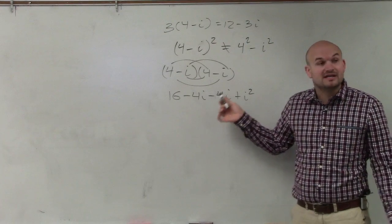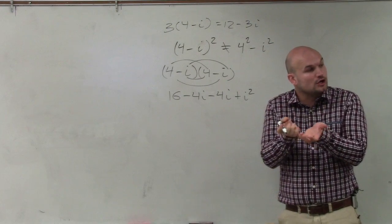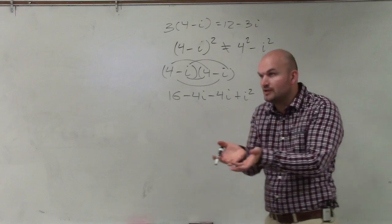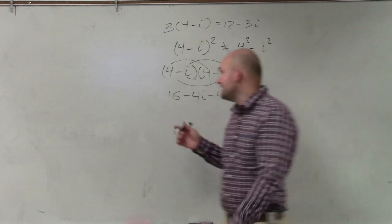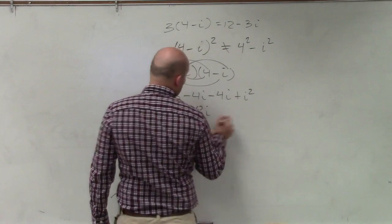Now, please remember -4i minus 4i. We are going to subtract our coefficient. So if you owe me $4, and then you owe me another 4 more dollars, then you owe me $8. So that's 16 - 8i.